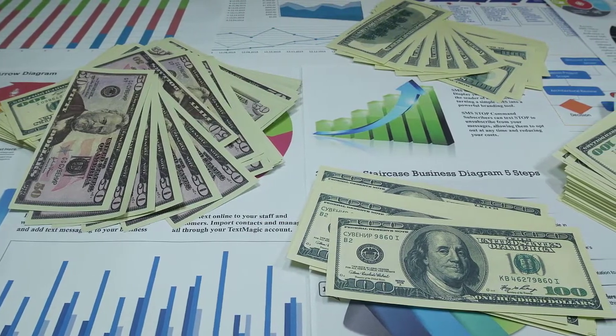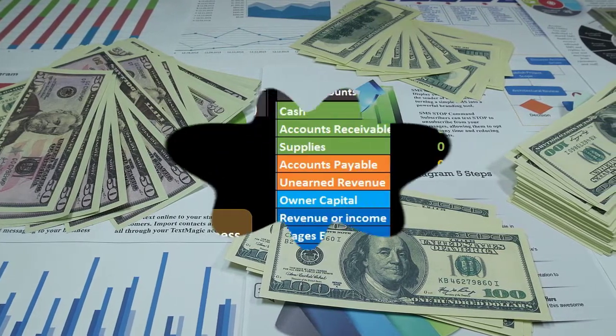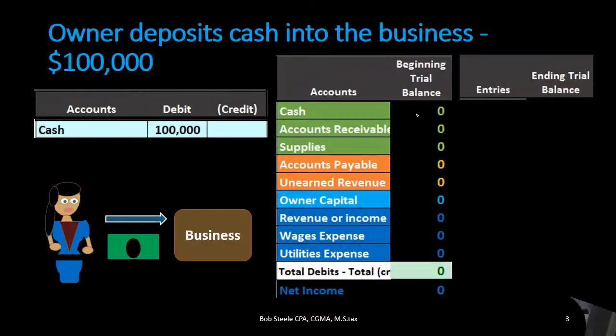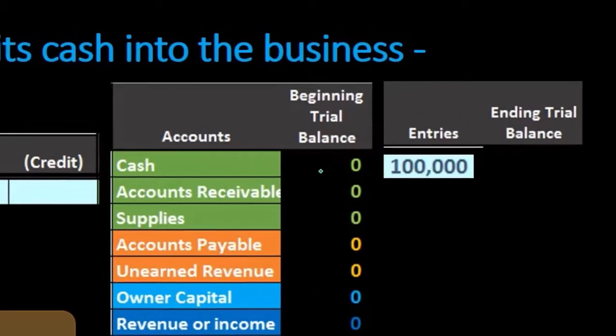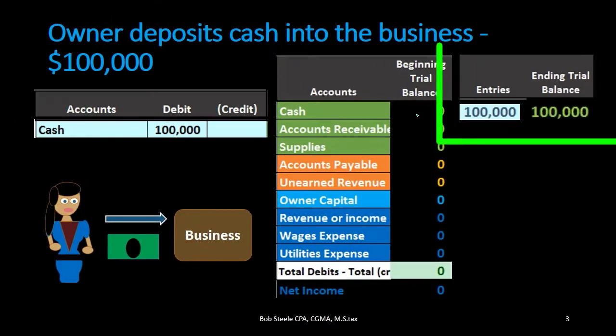Cash has a normal debit balance, and in order to make any account go up we do the same thing to it as its normal balance — in this case, another debit. So we're going to debit the cash account. Whether we're doing this in Excel or by hand, I would write down that we are going to debit cash first, and then think about the second component.